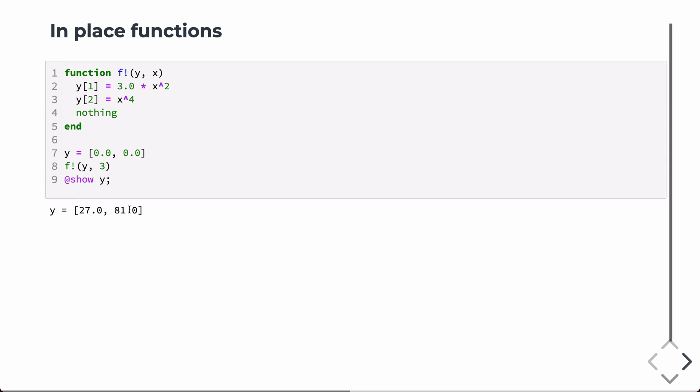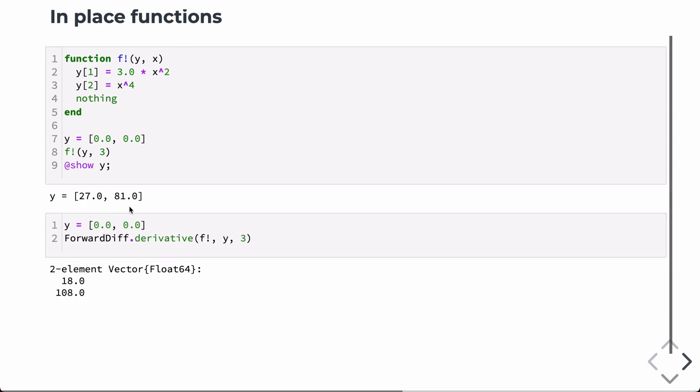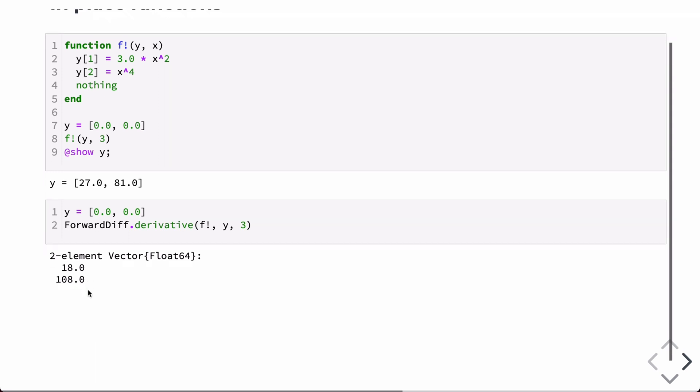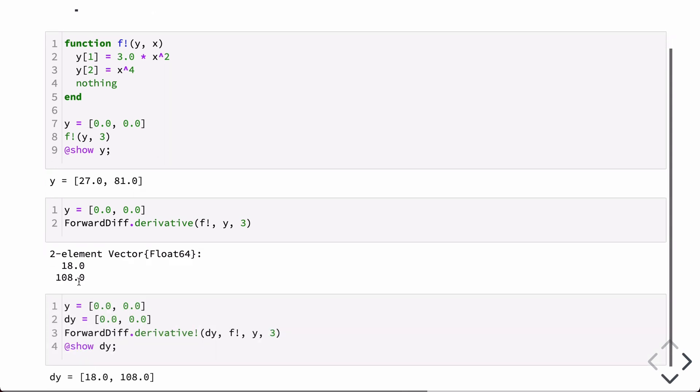So then we can also then just pass that in to compute the derivatives at those locations as well. So we pass in now f exclamation point, the in place function, the array y where we're going to store the values of the derivatives now, and the value of x which with respect we want to compute the derivative. So in this case, we get these two and you can verify that those are, in fact, the right numbers.